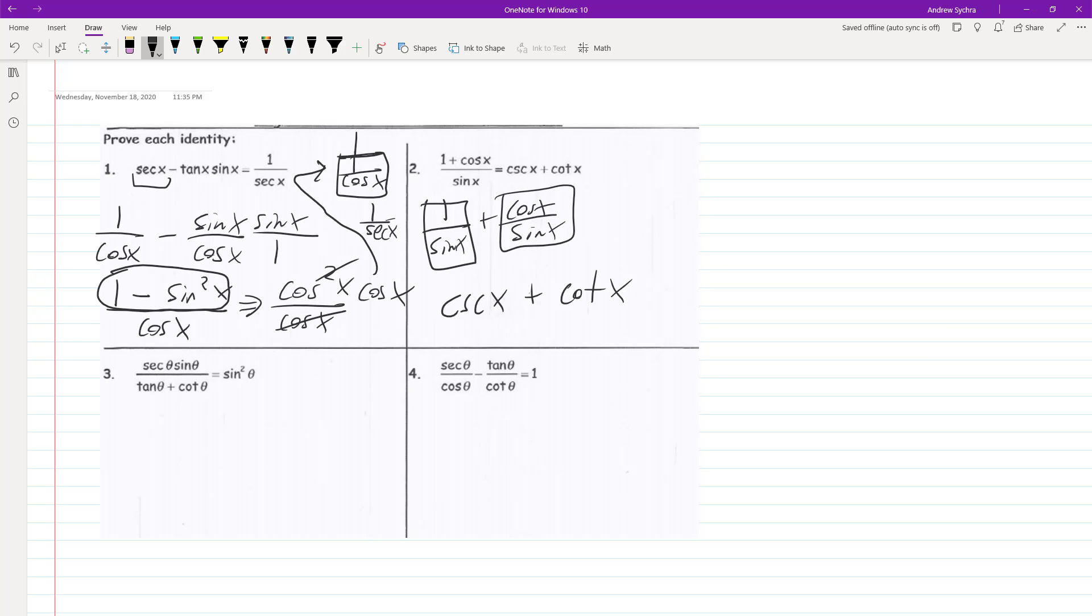All righty. So next up here, what we'll do is on the bottom here, this is the same thing as sine of theta over cosine of theta plus cosine of theta over sine of theta. So we can cross multiply, we can do cosine of theta, sine of theta on the bottom.